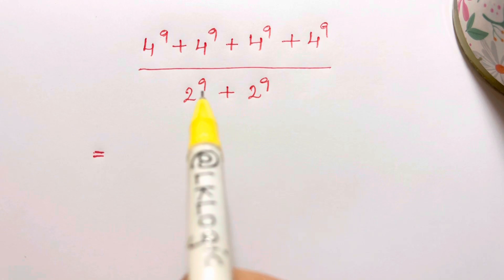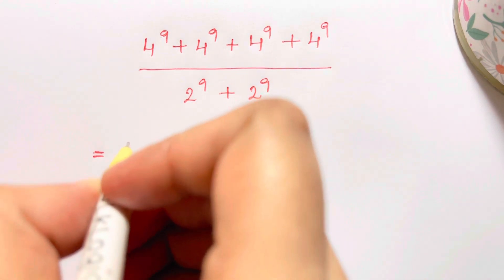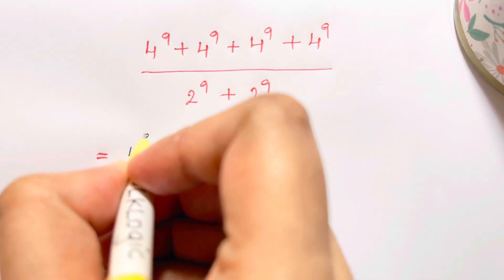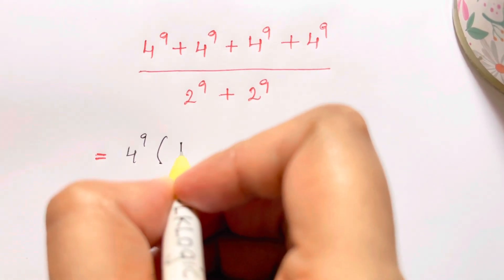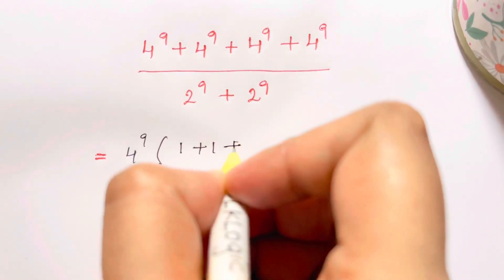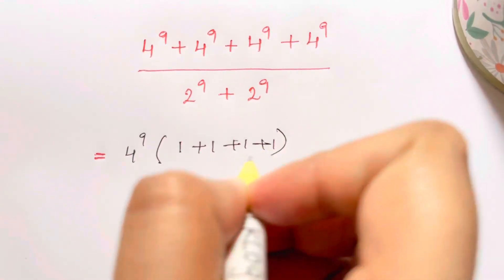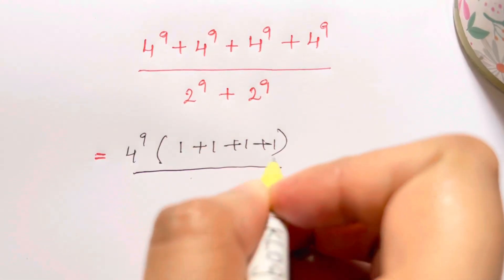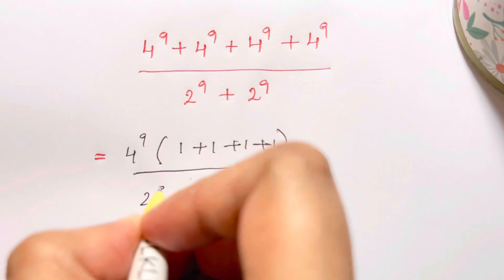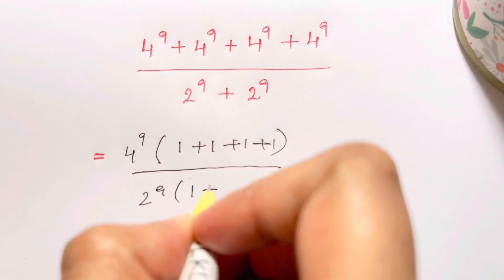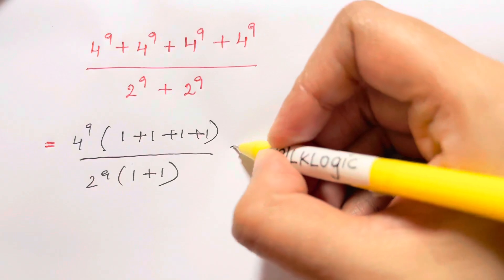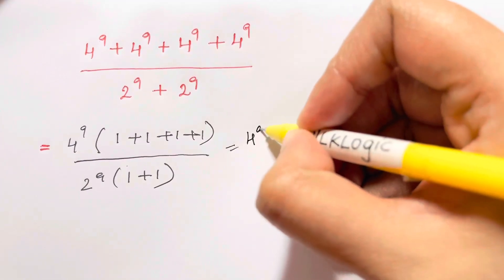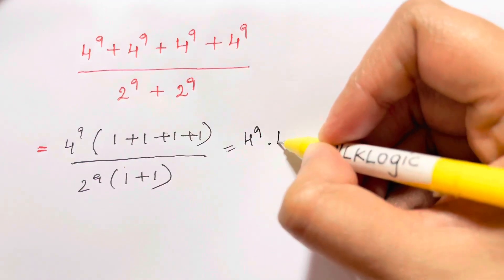So here I have something in common, that is 4 to the 9s, so I'm just taking out common. So I'm left with 1 plus 1 plus 1 plus 1 over, then I have 2 to the 9s common, so I'm left with 1 plus 1. This will give me 4 to the 9th times 4 over